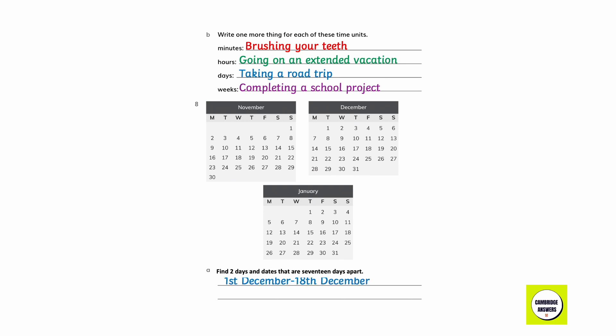Find two pairs of days and dates that are 15 days apart: 1st December to 18th December, and 14th January to 31st January.